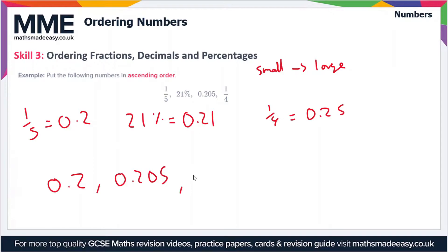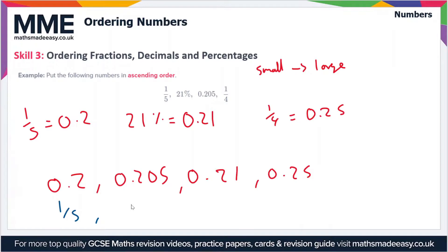Then we have 0.21, and finally we have 0.25. You can go through each of those and make sure they're in order. Now all we have to do is put these back in their original form: 0.2 was one fifth, 0.205 was given as 0.205, 0.21 was 21%, and 0.25 was one quarter.